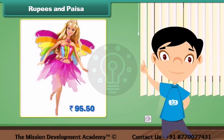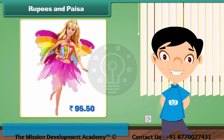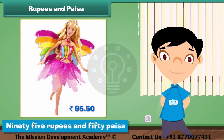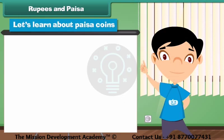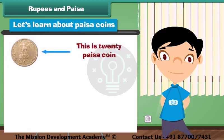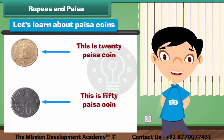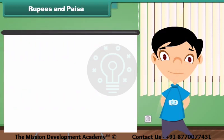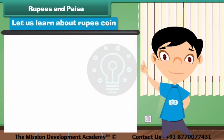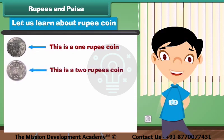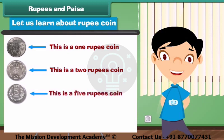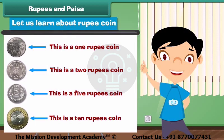Look at this Barbie doll — the price is written on its label. We read the price as 95 rupees and 50 paise. Let's learn about paise coins. This is a 20 paise coin. This is a 50 paise coin. Now let us learn about rupee coins. This is a 1 rupee coin. This is a 5 rupees coin. This is a 10 rupees coin.